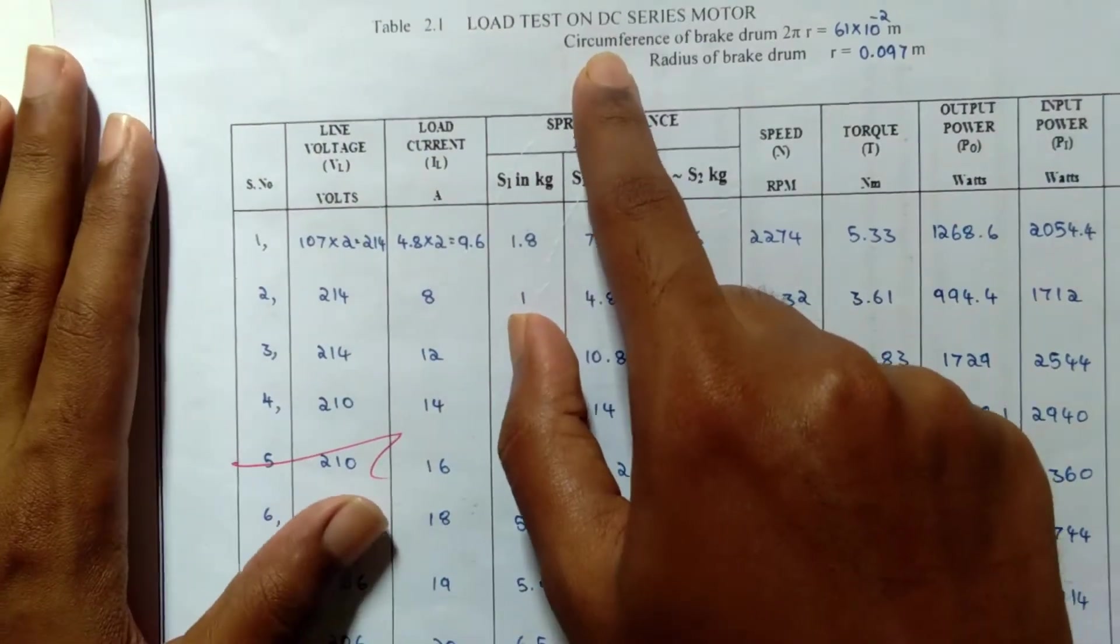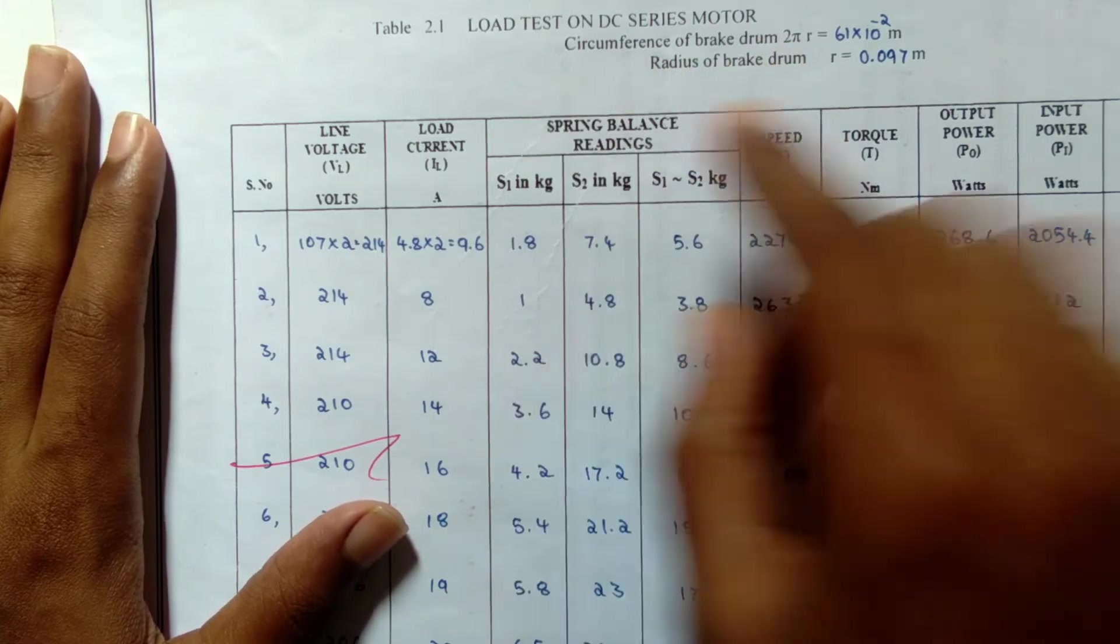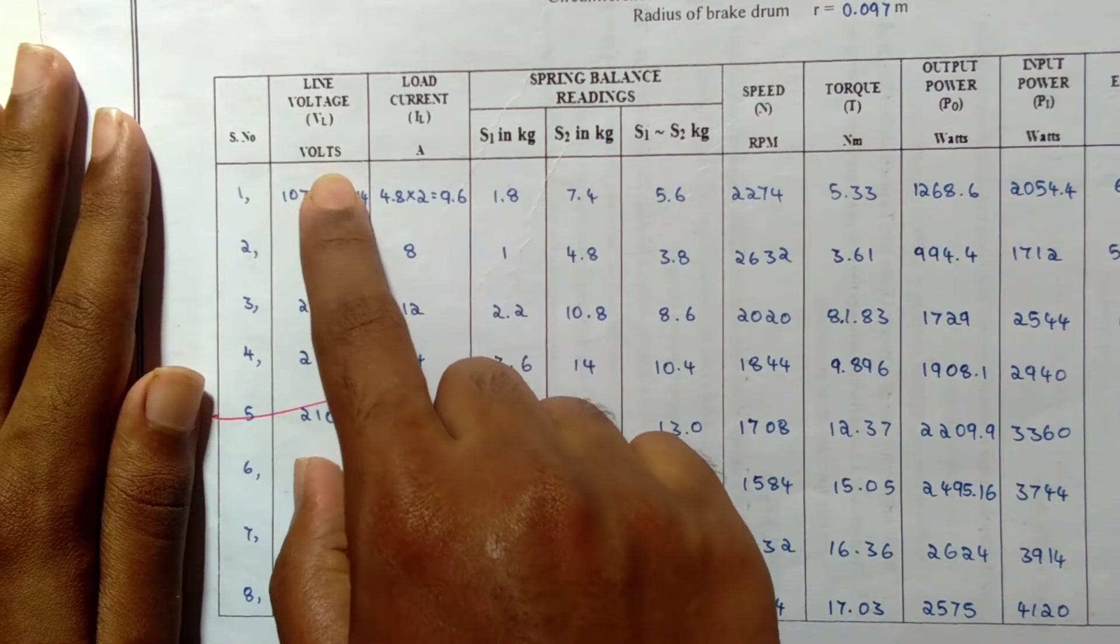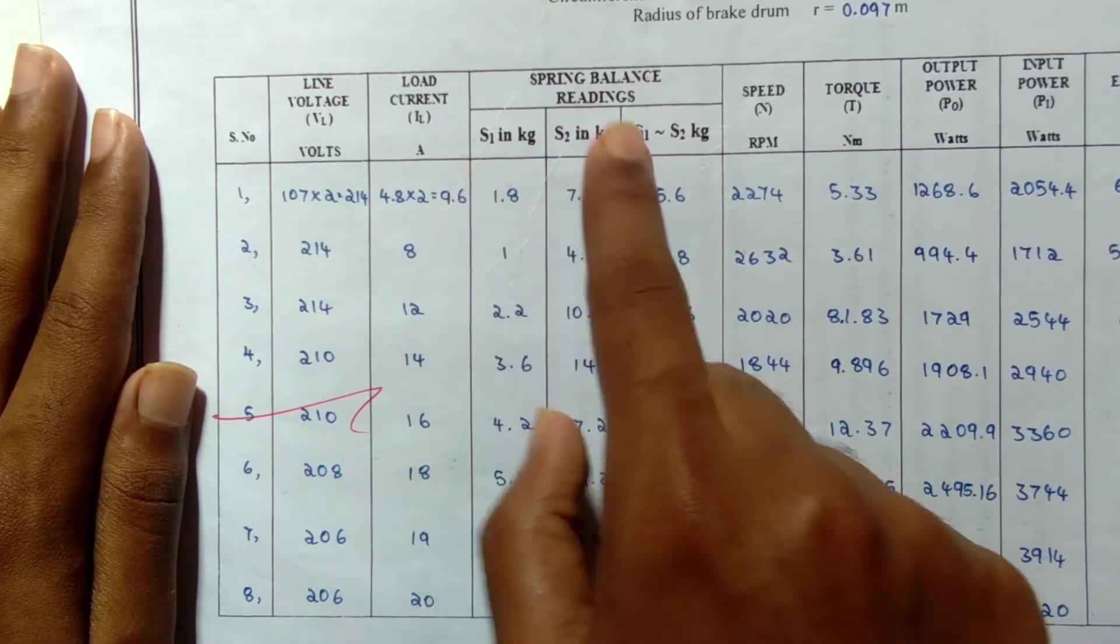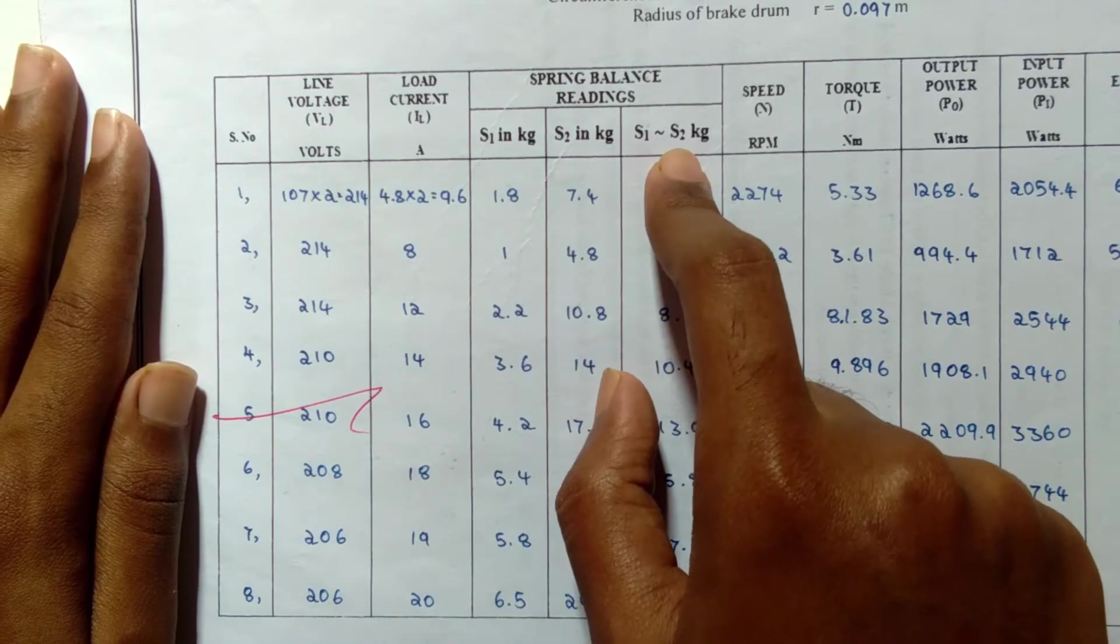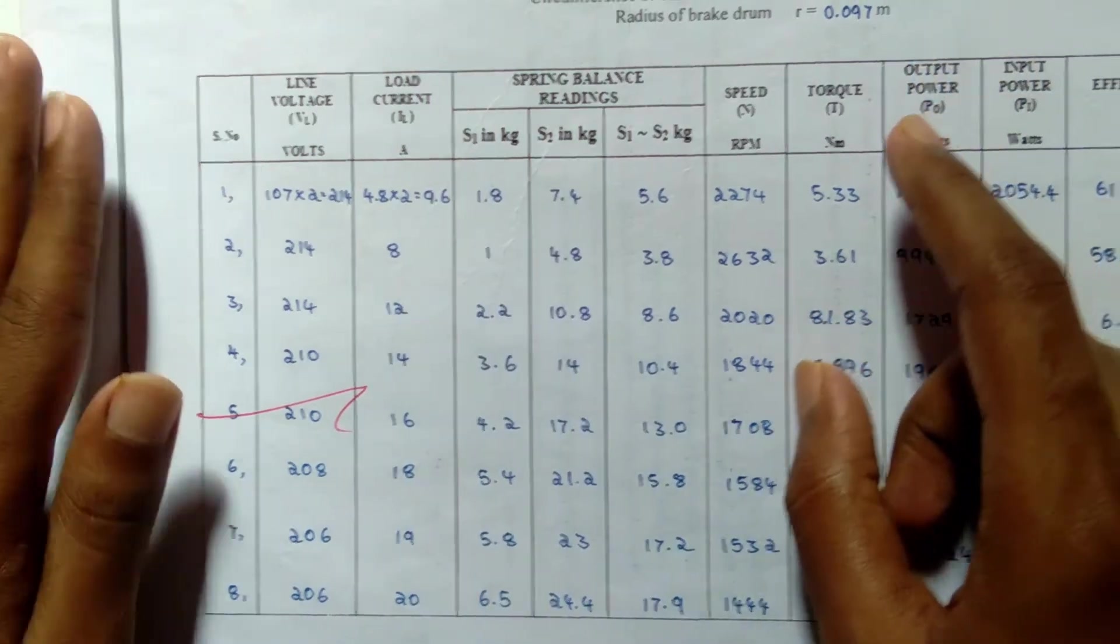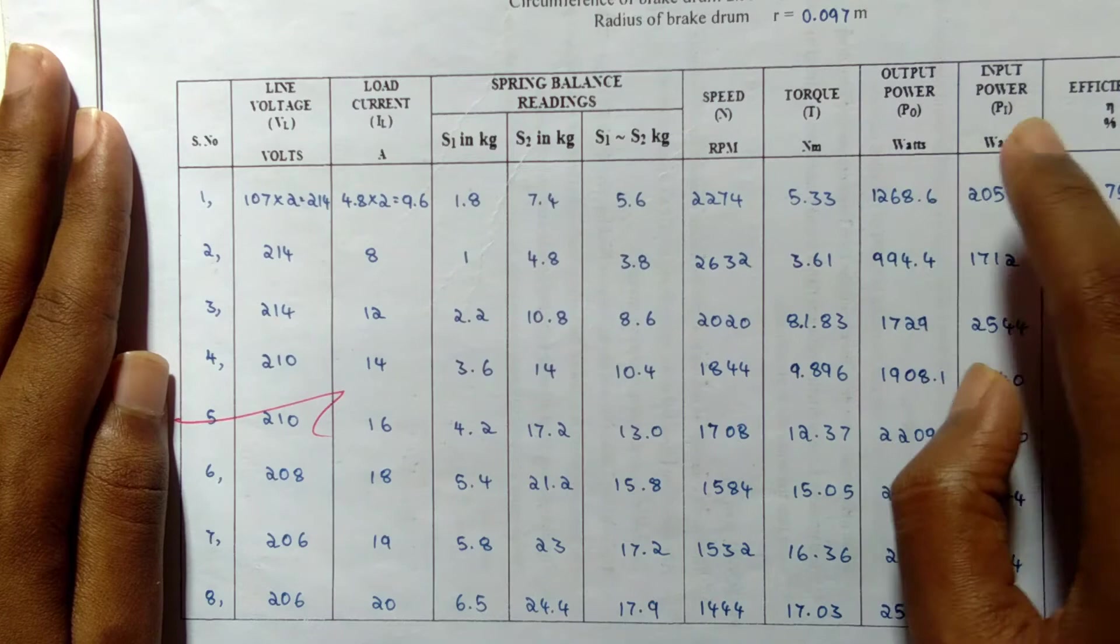This is the tabulation for this experiment. Here we note down the circumference of the brake drum and the radius of the brake drum. We're going to note down the line voltage, load current, and the spring balance readings S1, S2. S1 minus S2 kg is the difference between both the spring balance readings.